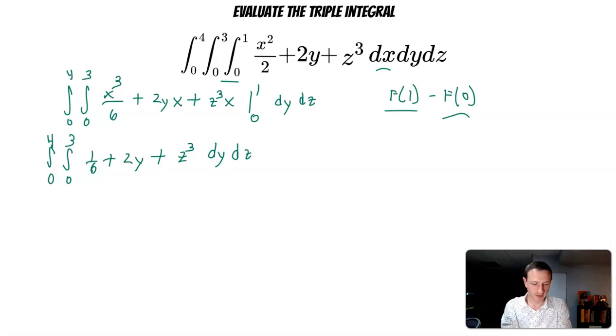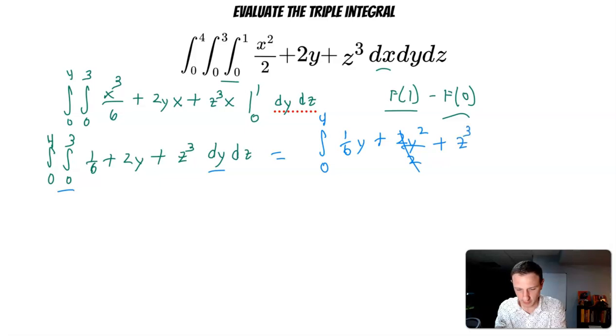Next, now we are taking this integral from 0 to 3 with respect to y. I have 1 sixth, that's a constant. So this is going to be the integral from 0 to 4 of 1 sixth y, plus 2y squared over 2, the twos are going to drop out there, plus z to the third y. And this is going from 0 to 3. And then we have dz.